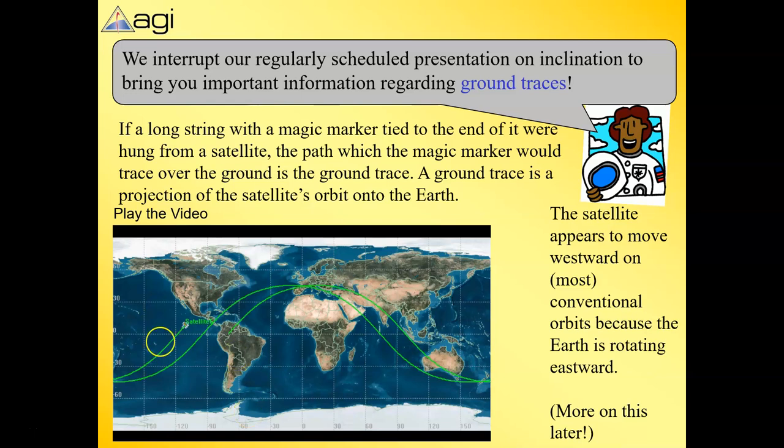Might not be what you would expect. You might expect it to go over the same path, but because the Earth rotates, you see the line shift west. It started here over South America, and when it came to the same place over the equator, it actually appears like it's moving west.